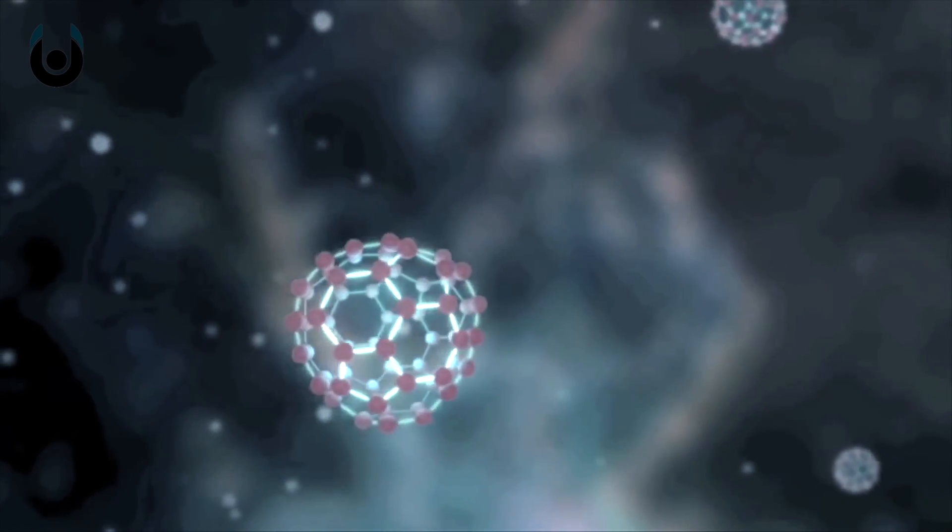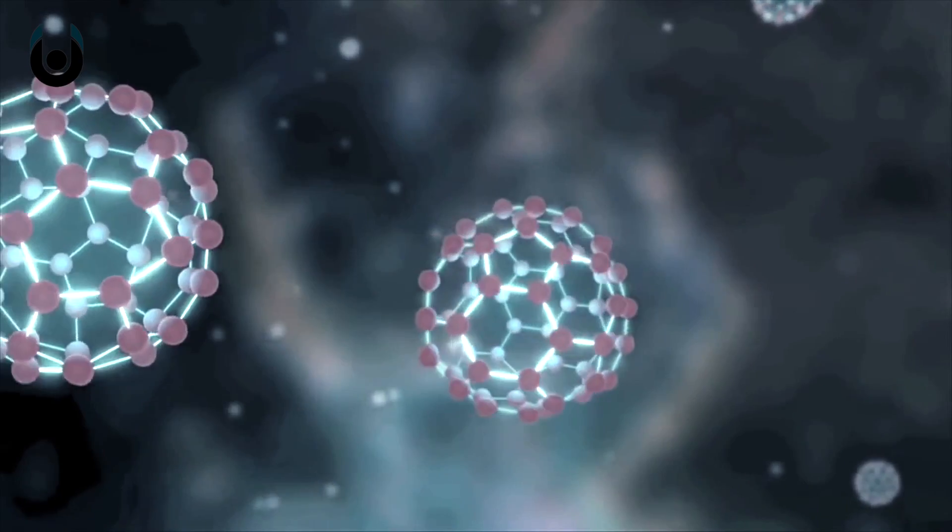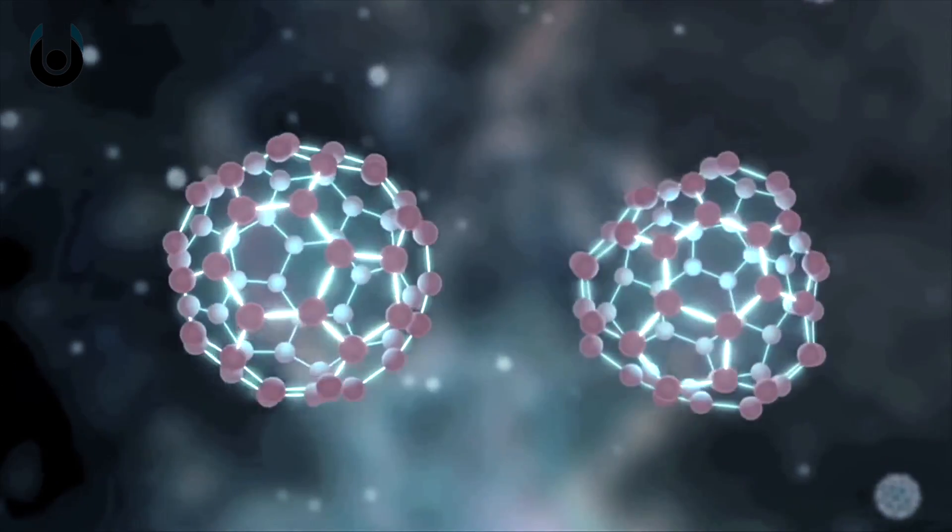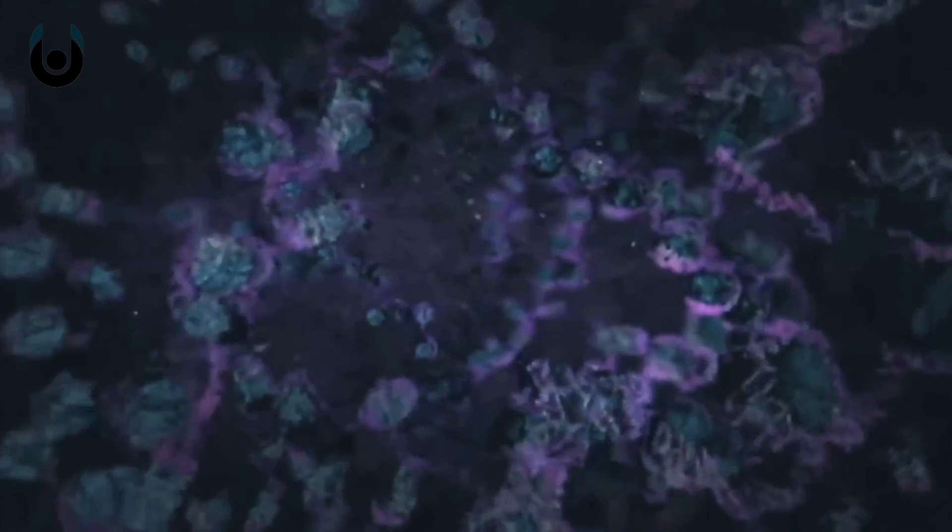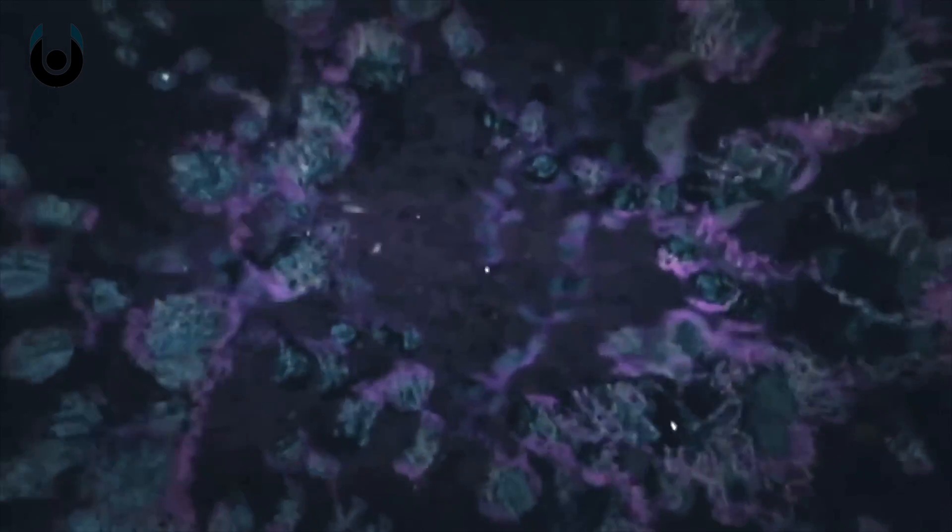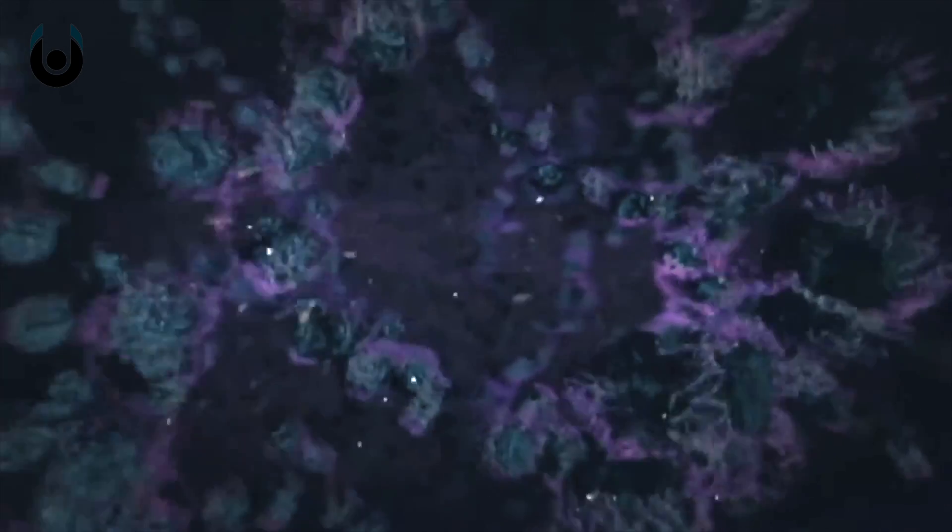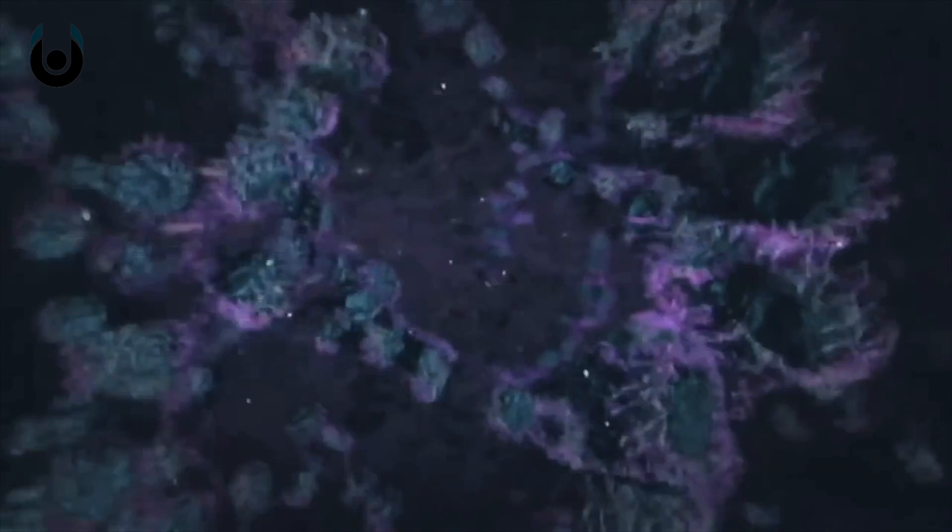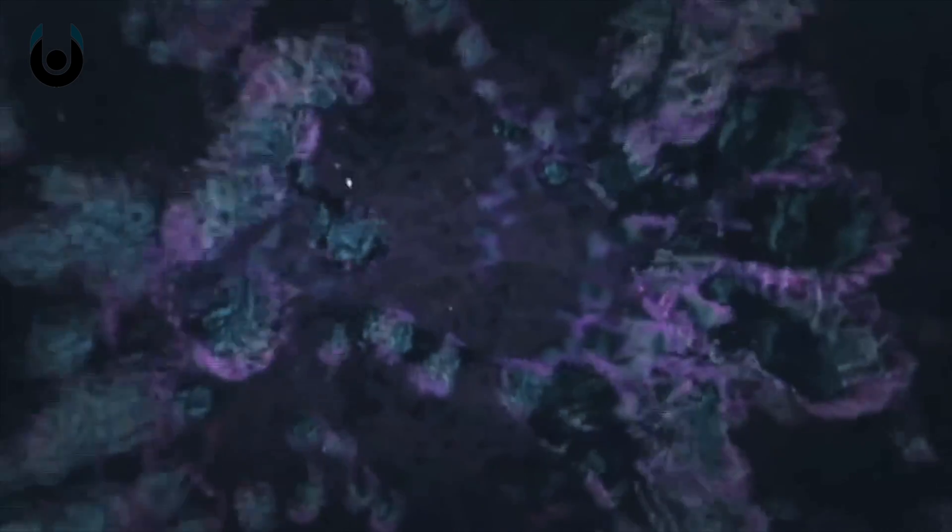Currently, there are drugs based on small molecules called senolytics which are designed to eliminate these zombie cells which refuse to die. This is a good thing because such defective senescent cells persist to emit harmful chemicals that damage other healthy cells and cause inflammation, a process that is one of the basic mechanisms of aging. But this is only a small part of the process.